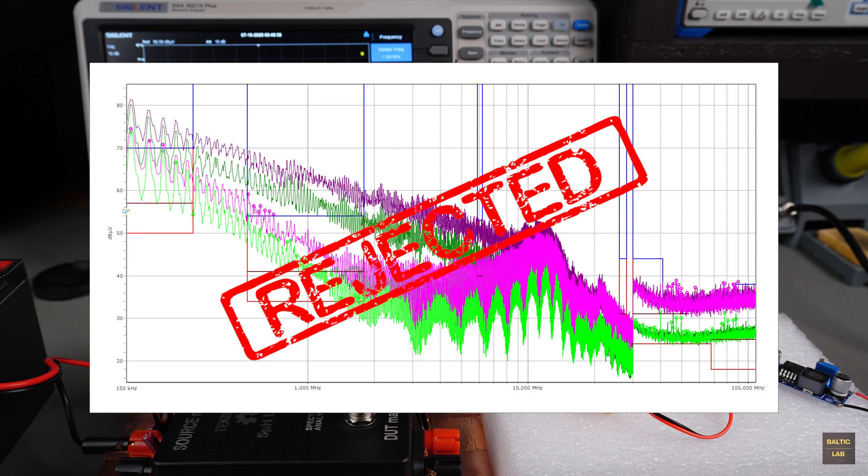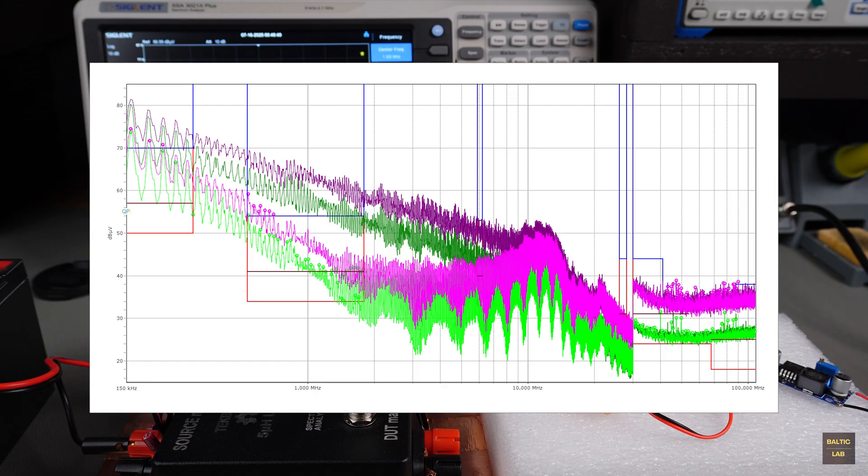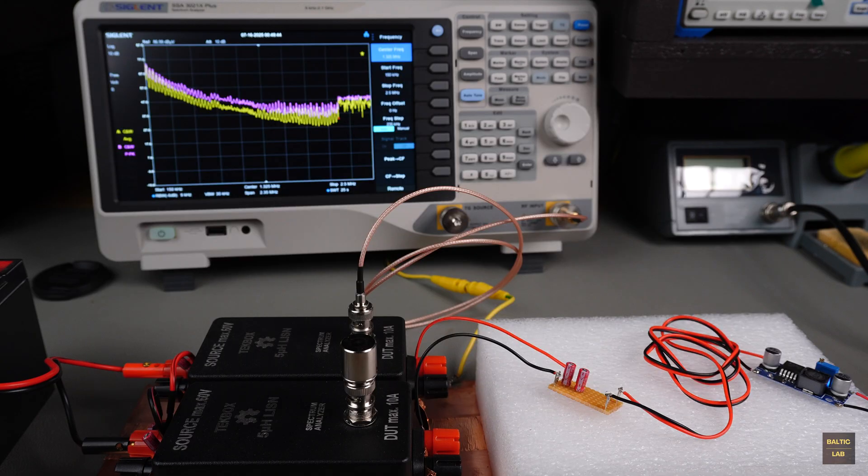That was to be expected. Both the voltage source and the input of the buck converter already have relatively low impedance. Additional small impedances, like those from the capacitors, bring limited benefit in this case. To effectively suppress interference, you need significant impedance jumps. And that's exactly what's missing here.